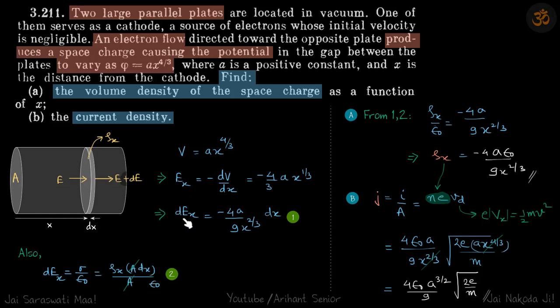But here we have a term of Ex. So we will differentiate it once more. And we get dEx is minus 4a by 9 x power 2 by 3 times dx. So now we can eliminate dx from both the equations because we need ρx. So we do that and we get ρx by epsilon naught is equal to minus 4a by 9 x power 2 by 3. And simplifying we get ρx is equal to this, which is our answer. This is the volume density of the space charge.